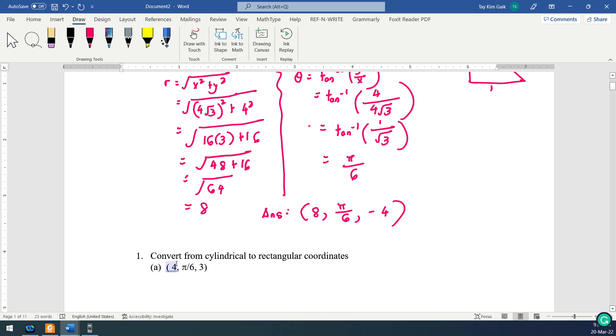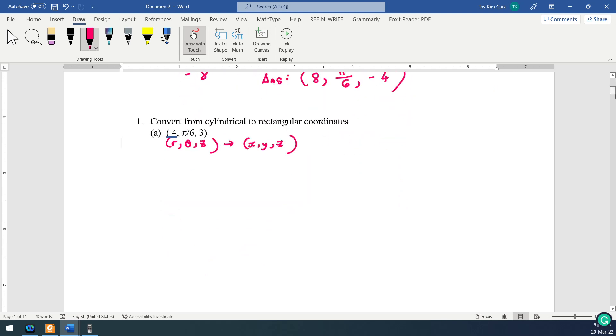So cylindrical to rectangular. So label this one. Given r, theta, z. R is 4, theta is pi over 6, z is 3. You want to get back x, y, z.